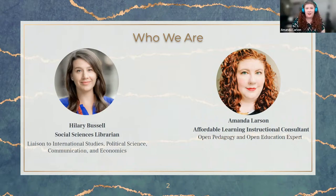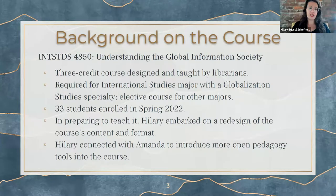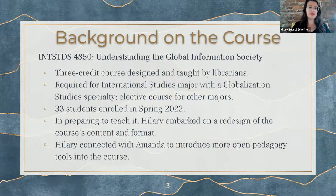And I'm Amanda Larson, the Affordable Learning Instructional Consultant. My work supports instructors across Ohio State who want to incorporate open pedagogy or open educational practices into their classrooms. International Studies 4850 is an upper-level undergraduate course at Ohio State that's required for students majoring in International Studies with a Globalization Studies specialty. In the class, students apply information literacy concepts to topics including open data, copyright, censorship, and free speech as they explore how information is produced, disseminated, and interpreted across the world. The course was first created by area studies librarians and has been taught by librarians ever since.